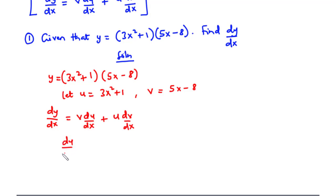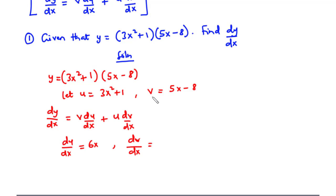du/dx means we want to differentiate u with respect to x. We have u equal to 3x² + 1. When you differentiate 3x² you get 6x — multiply 2 by 3, maintain x, and decrease the power by 1. When you differentiate the constant 1 you get 0. So du/dx equals 6x. For dv/dx, differentiating 5x gives 5, and the constant -8 gives 0. So dv/dx equals 5.